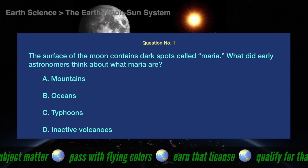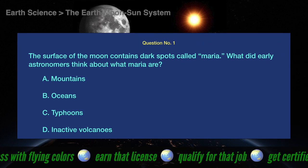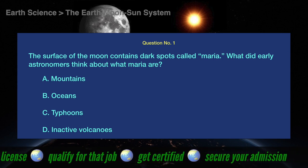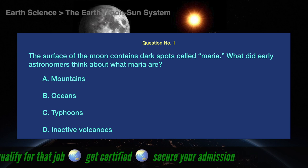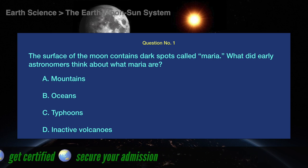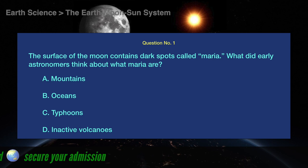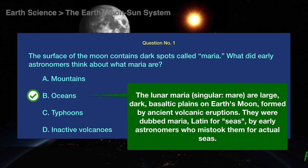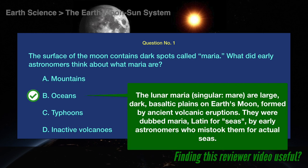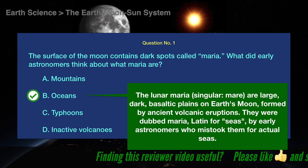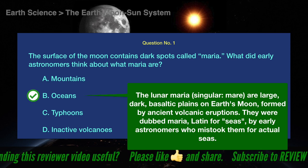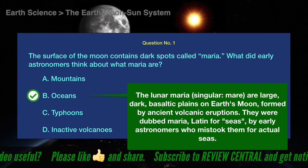Question number 1. The surface of the moon contains dark spots called Maria. What did early astronomers think about what Maria are? A. Mountains. B. Oceans. C. Typhoons. D. Inactive Volcanoes. The correct answer is B. Oceans. The lunar Maria are large, dark, basaltic planes on earth's moon, formed by ancient volcanic eruptions. They were dubbed Maria by early astronomers who mistook them for actual seas.